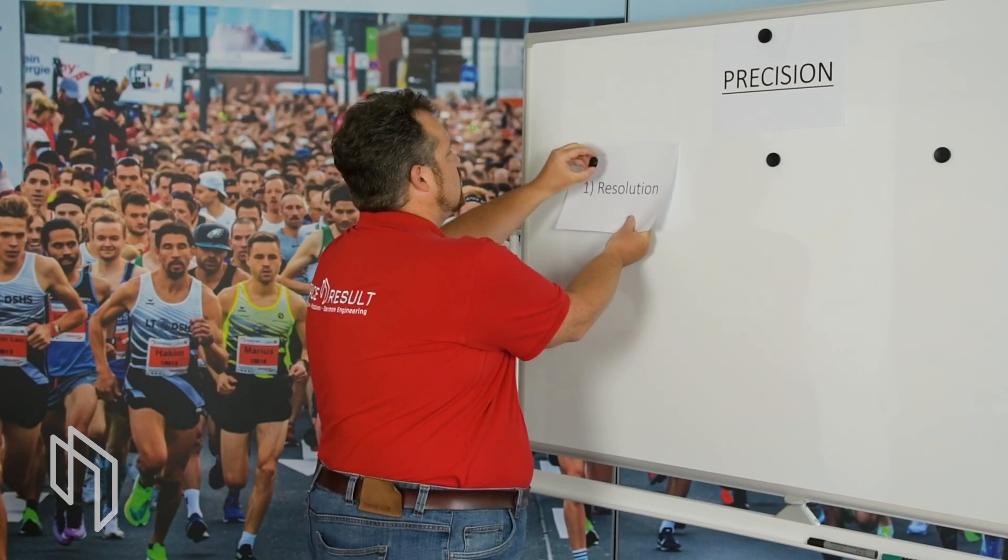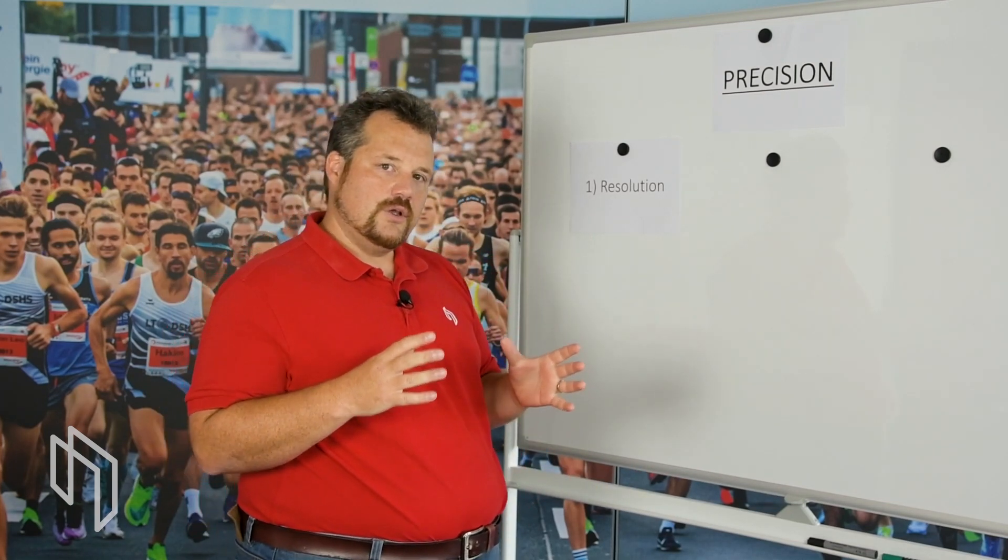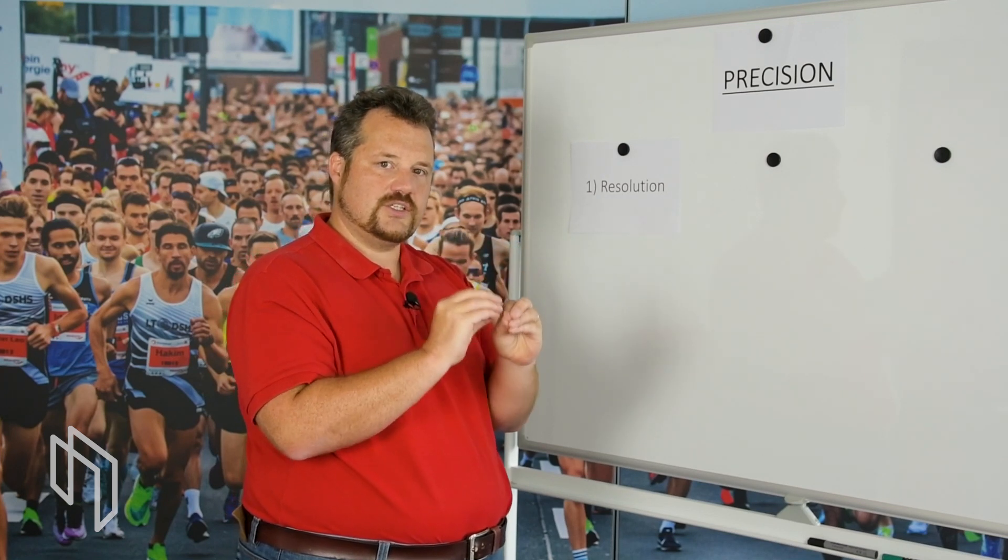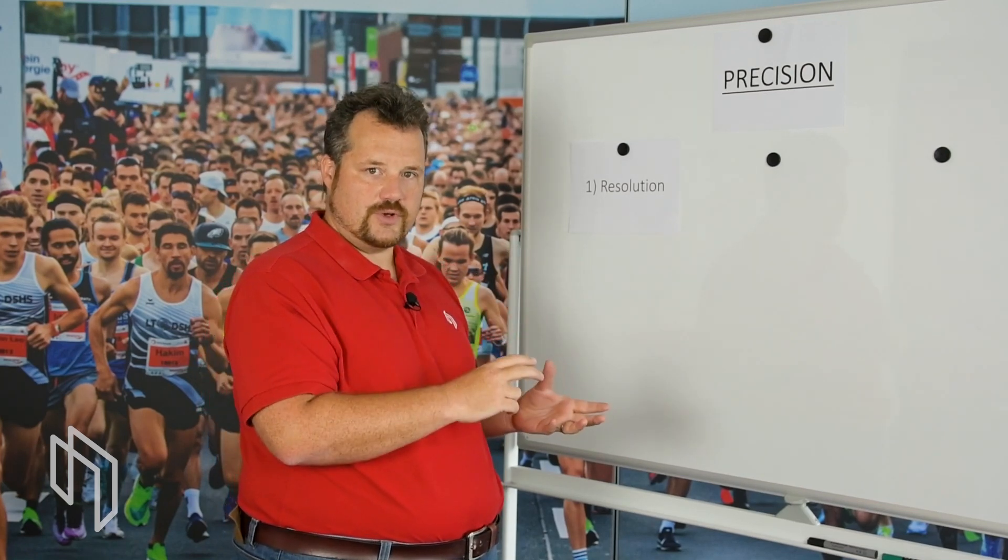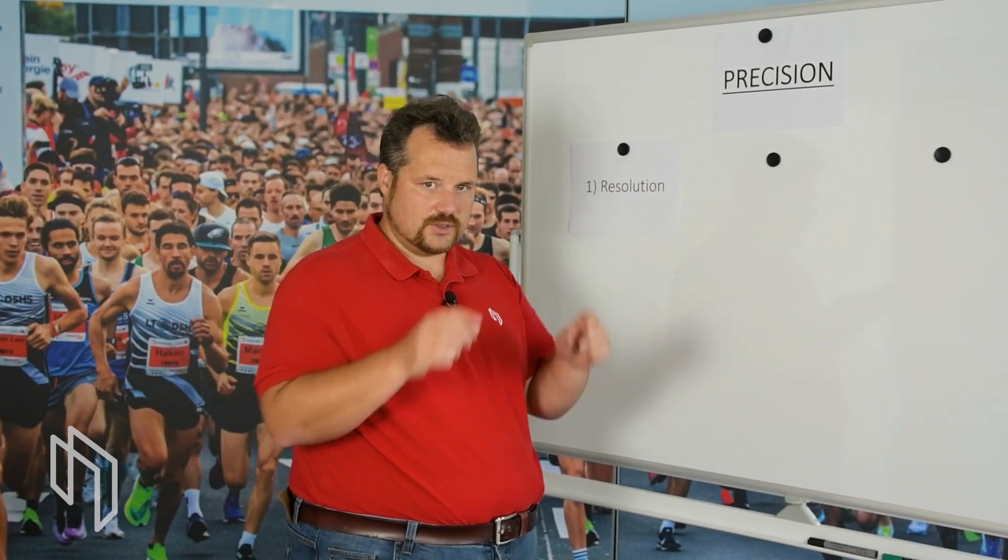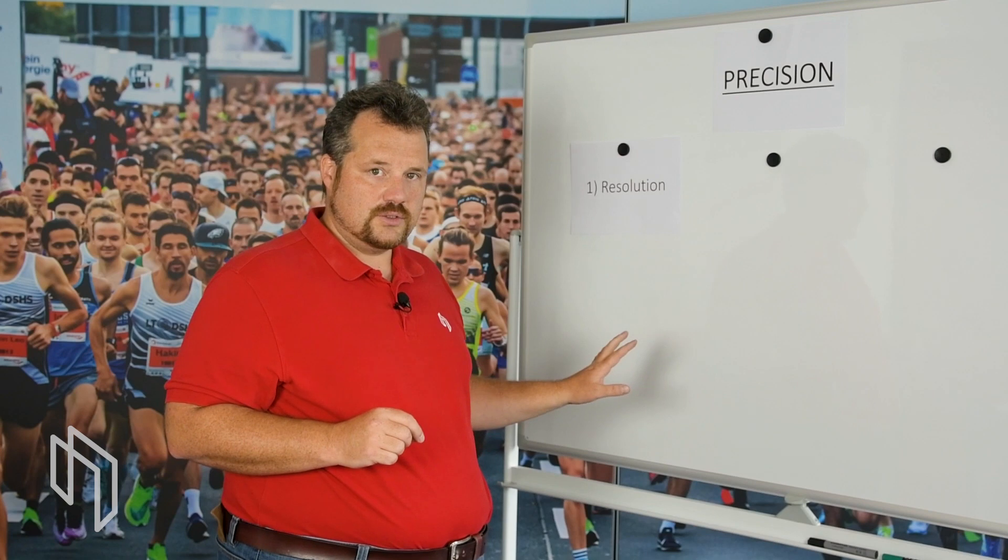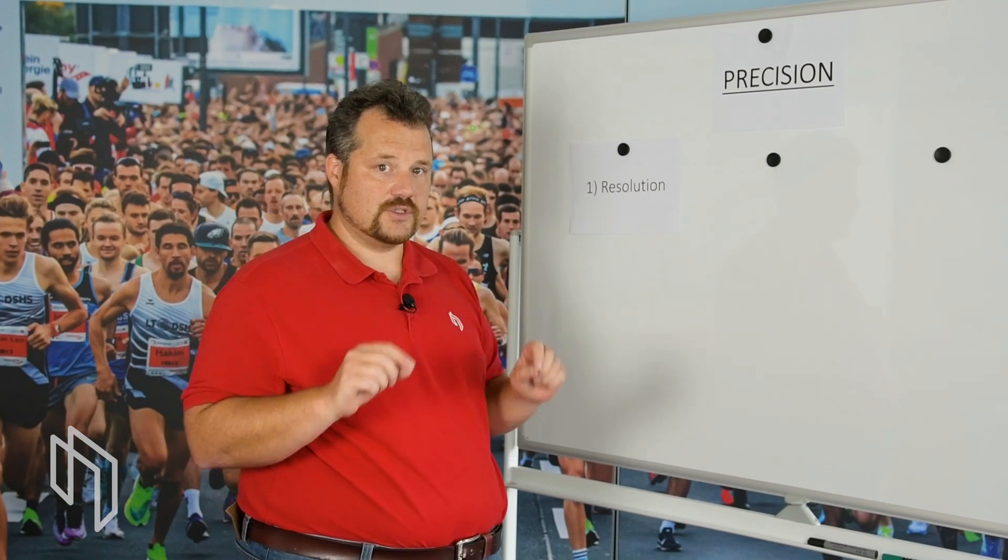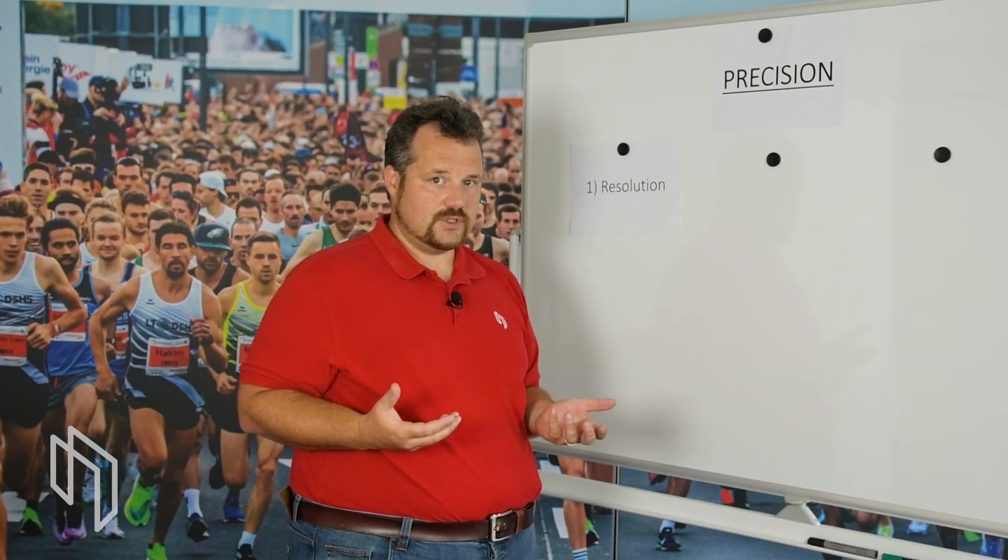The first one is resolution. With resolution, we mean how does the timing system store its data internally, how precise is the timestamp actually put into memory. Resolution you could compare, for example, for digital cameras with your megapixel count of your picture. It does not necessarily mean that you have a high quality result. If you have a crappy lens in front of your camera, resolution doesn't count at all.